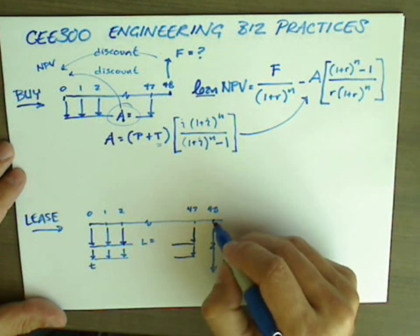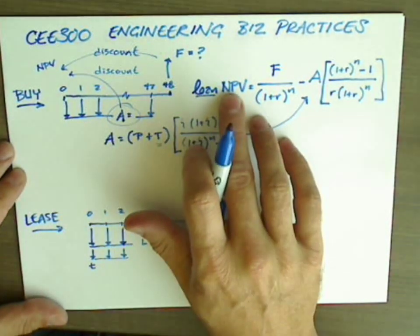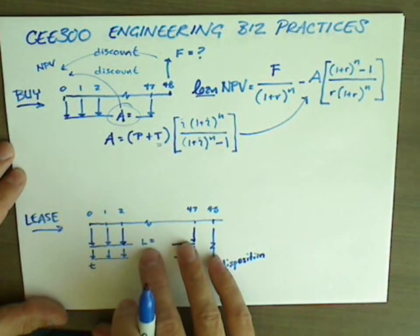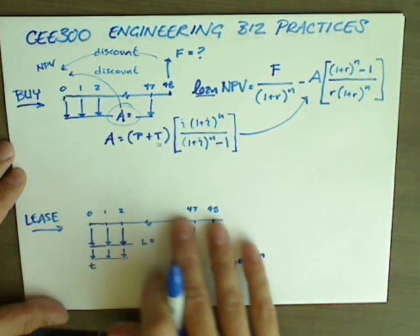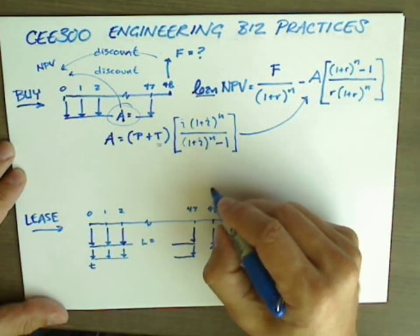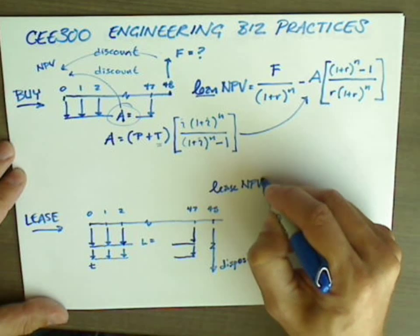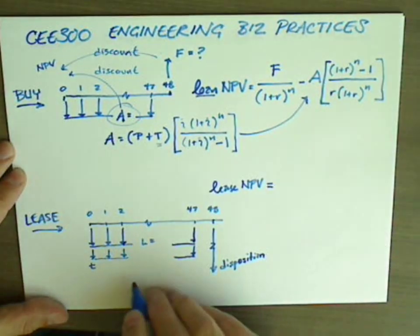For now, what we want to do so we can compare on a net present basis the buying option to the leasing option is understand how we compute a net present value for the leasing cash flow diagram.